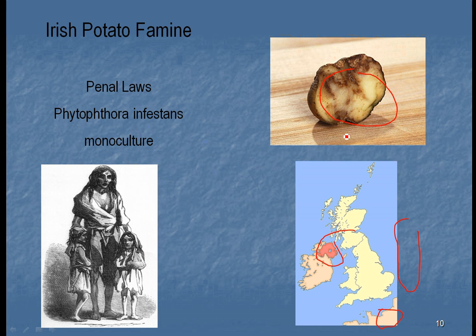Relying on one single variety allowed a fungus to come in, and when it did, it killed off the entire potato crop. The potatoes could be underground in storage, and when pulled up the next day, they were just a mushy mess. The Irish population, which had grown over threefold, suddenly lost two-thirds of its people. People started emigrating to the United States. The Irish population went from over three million down to less than one million — all because they counted on one variety of the potato.